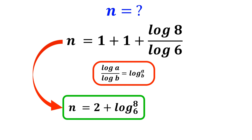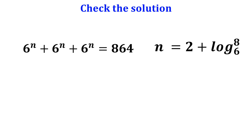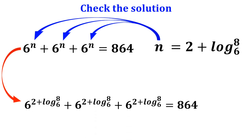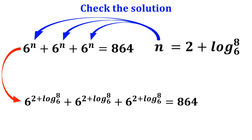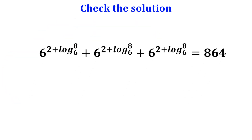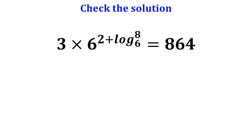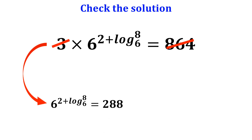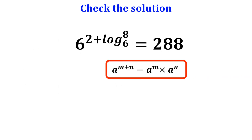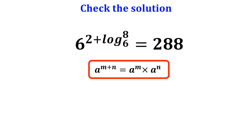Now let's verify the solution. The original equation was 6 to the power of n plus 6 to the power of n plus 6 to the power of n equals 864. Substituting n equals 2 plus log of 8 with base 6, it becomes 3 times 6 to the power of (2 plus log of 8 with base 6) equals 864. The 3 cancels with 864, simplifying to 6 to the power of (2 plus log of 8 with base 6) equals 288. According to the rules of exponents, a to the power of m plus n equals a to the power of m times a to the power of n.